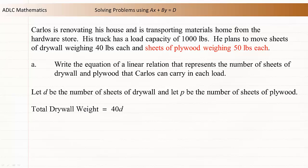Similarly, each sheet of plywood weighs 50 pounds, and there are p sheets of plywood, so the total weight of the plywood can be represented as 50p. These two weights added together can have a maximum of 1,000 pounds, so 40d plus 50p equals 1,000.